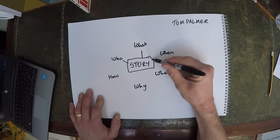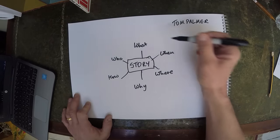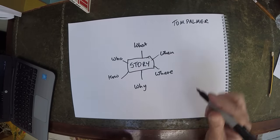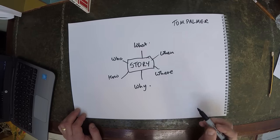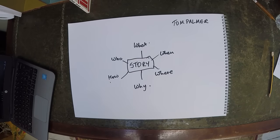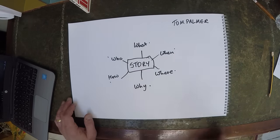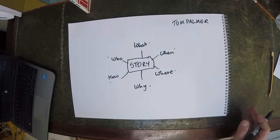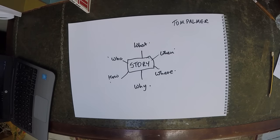These six questions help me when I'm writing a story to get stuck into it. I want to think of the characters — that's the 'who' — and think about what the story can be about, the 'why' and the 'how', and then think of the setting, the 'where' and the 'when'. If I get all of that onto a sheet of paper — here's a previous one I've done before — it'll help me get into the story.